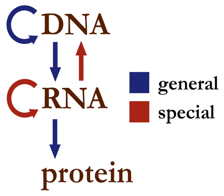Reverse transcription is the transfer of information from RNA to DNA — the reverse of normal transcription. This is known to occur in the case of retroviruses such as HIV, as well as in eukaryotes in the case of retrotransposons and telomere synthesis. It is the process by which genetic information from RNA gets transcribed into new DNA.